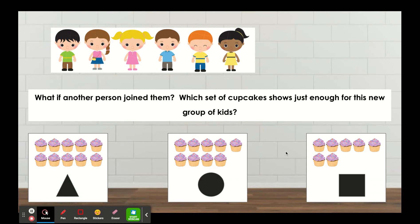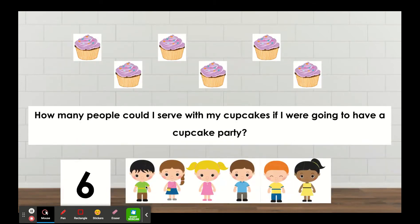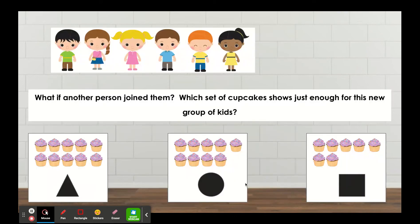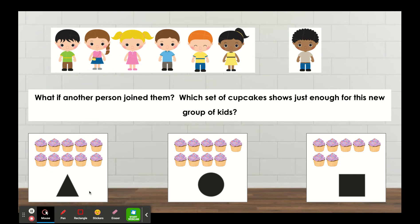Now I want you to think: what if another person joins them? Before I knew there were six cupcakes, and now there's one more. Which set of cupcakes shows just enough, or the same as, this new group of kids? Take a look at how many kids there are all together and think: is the triangle box enough? Is the circle box enough? Or is the square box enough? Choose your answer to move on.